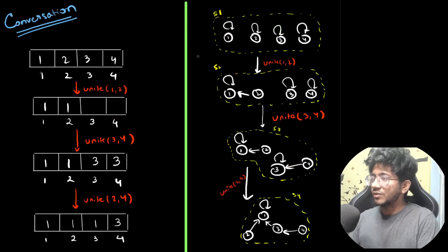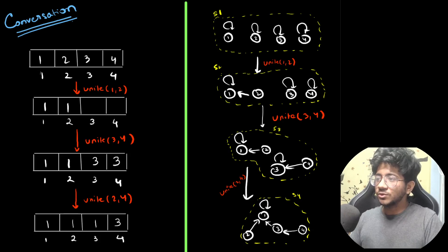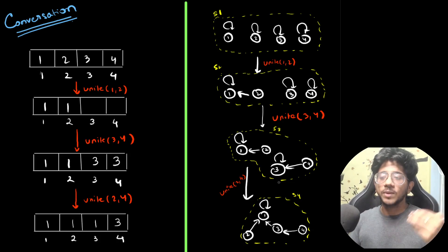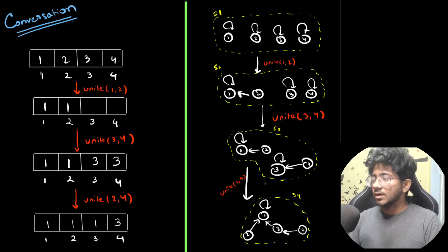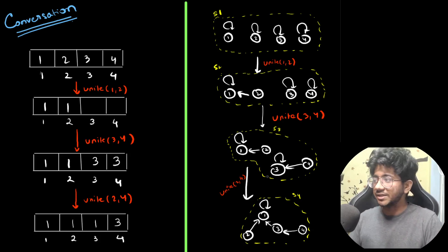What we want to do is make sure we can go back between states — from S4 we can go back to S3, from S3 back to S2, and so on — while still supporting every union find operation at whichever state we are currently at.